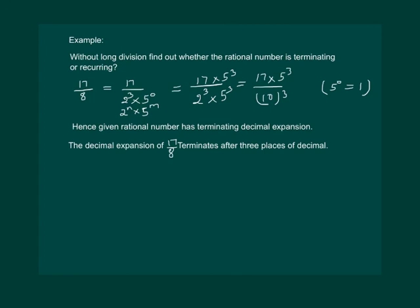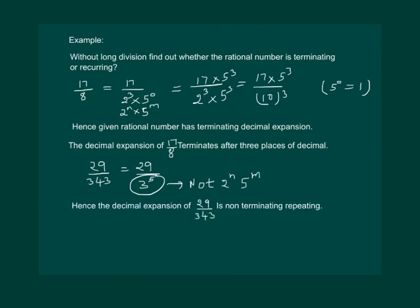Let us take up another example. Say we take a rational number 29 by 343. Let us prime factorize the denominator. It comes out to be 29 by 3 power 5. Clearly the denominator is not of the form 2 power n 5 power m. So we conclude that the decimal expansion of 29 by 343 is non-terminating repeating.